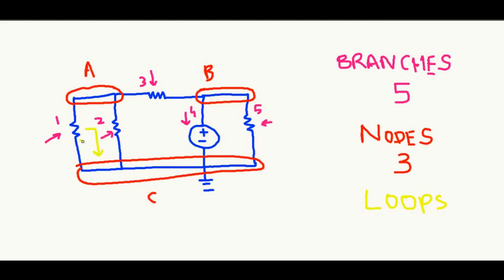How many loops do we have in this circuit? We have the first closed path X, the second closed path Y, and the third closed path Z — so altogether three loops or three meshes in this circuit. Hope you liked this video. Subscribe to our channel for more updates about electrical engineering and circuit analysis. This is Rafa Khan from Bim Persis Khan signing off.